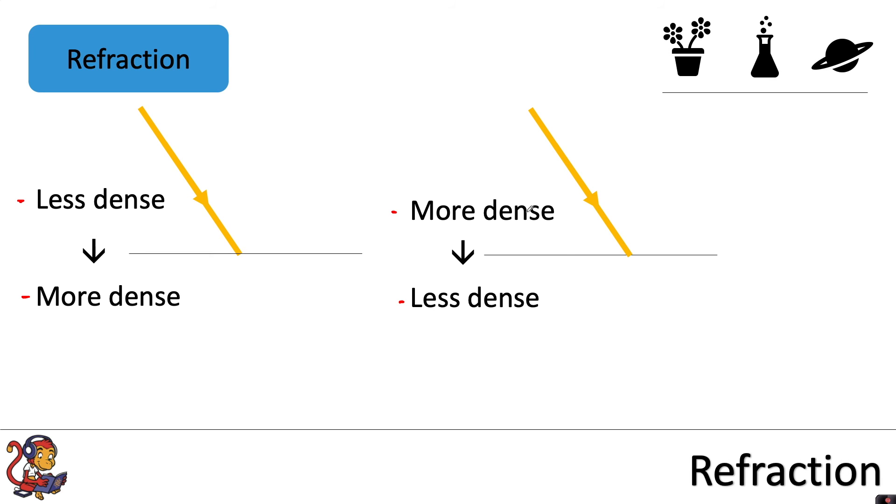So let's draw those dashed lines on, our normal lines on, at 90 degrees to the surface. So here they are at 90 degrees to the surface. And we said that when light moves from a less dense to a more dense medium, it will bend towards the normal. And if we were starting from a more dense medium, moving to a less dense medium, it would move away from the normal.